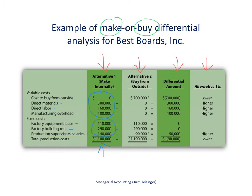If we go to an outside supplier, the costs for direct materials, direct labor, and variable manufacturing overhead go away, but we'll have variable costs charged by the outside supplier per wakeboard. We'll continue to have the factory equipment lease and the building rent, as those aren't easy to exit in the short term. However, we can reduce supervisor salaries by $50,000 if we outsource. Therefore, our total costs will be $1,190,000 if we outsource production.